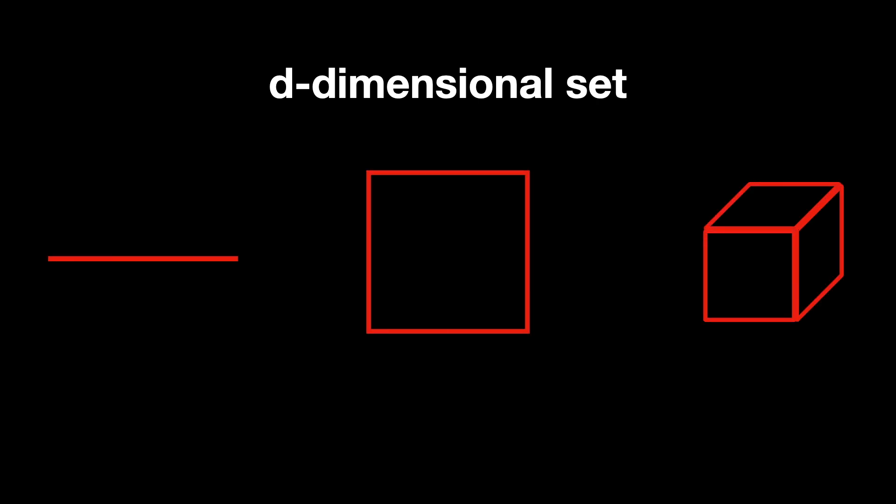The rule of thumb seems to be that to cover a d-dimensional set, be it a line, square, cube, whatever, the overlaps are at least d plus 1 and do not need to be greater than that.